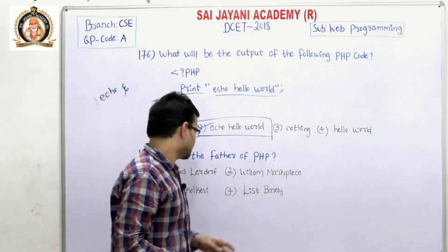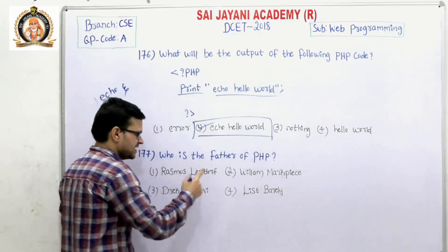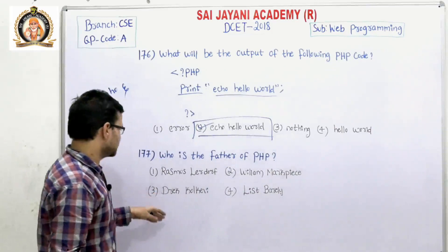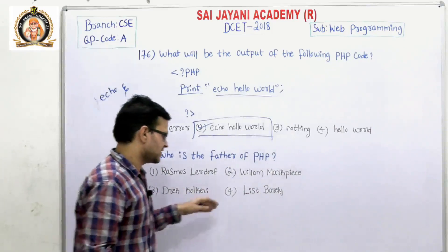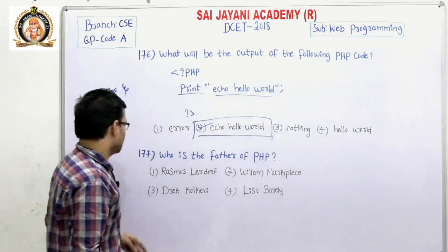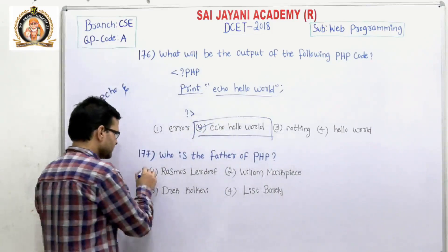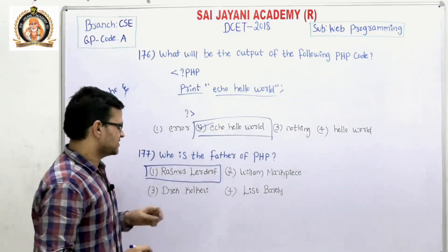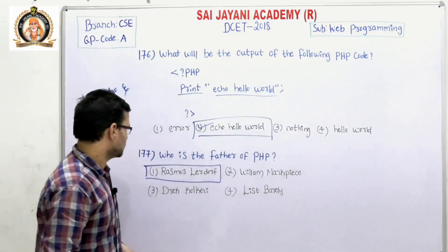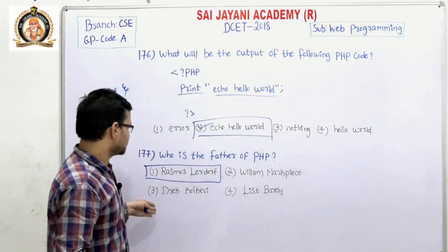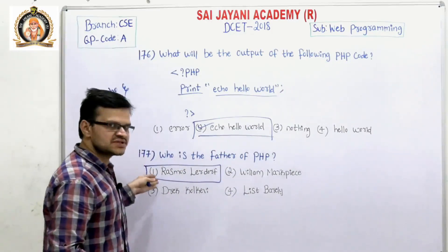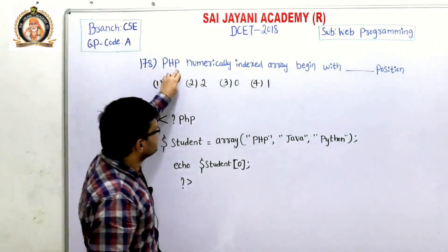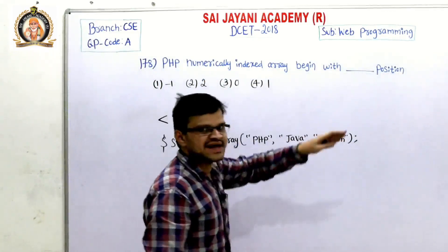Move on to question number 177: Who is the father of PHP? We have four options: Rasmus Lerdorf, William Makepeace, Derek Colkv, and Listberle. For question number 177, the first option, Rasmus Lerdorf, is the father of PHP. So the first option is the right answer.